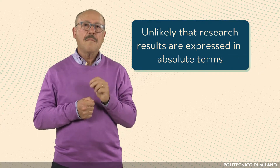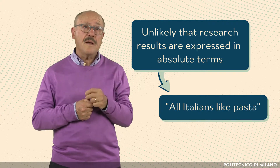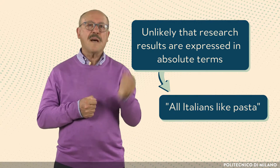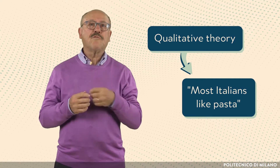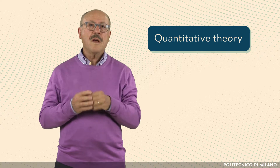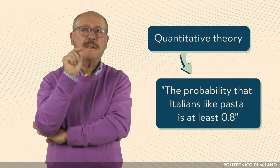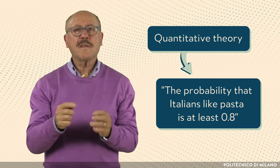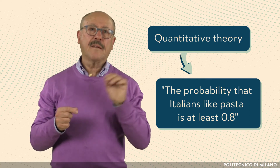Let us now go back to the simple case of research on culinary preferences used as a running example. It is unlikely that research results might be expressed in absolute terms by a theory like 'all Italians like pasta.' Surely there are Italians who don't like pasta and, for example, prefer rice. To account for that, one might summarize the findings through a qualitative theory: 'Most Italians like pasta.' To be more precise, one should express the findings in a quantitative way. To account for uncertainty, which is intrinsic in these kinds of problems, the results might be expressed in terms of probabilities — for example, 'the probability that Italians like pasta is at least 0.8,' meaning that at least 8 out of 10 random Italians liked pasta in repeated experiments.